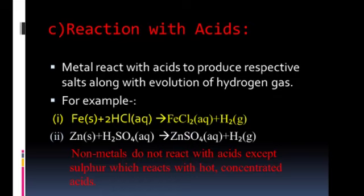Today, we will start with the other chemical properties, that is reaction with acids. What happens when metals react with acid? Metals react with acid to produce their salt along with hydrogen gas. Most metals react with even dilute acid to liberate hydrogen gas and form metal salt.